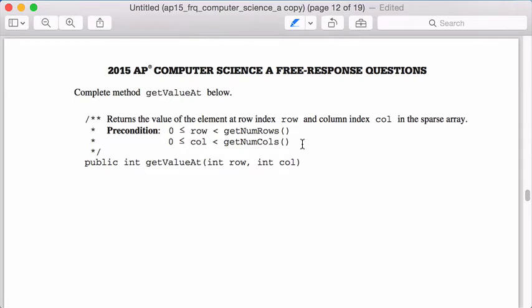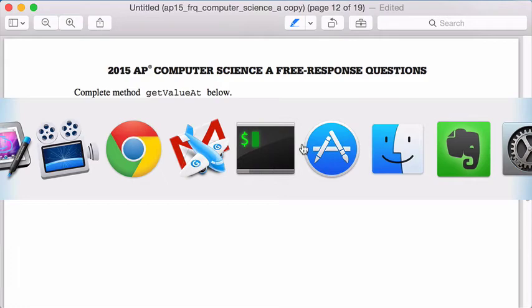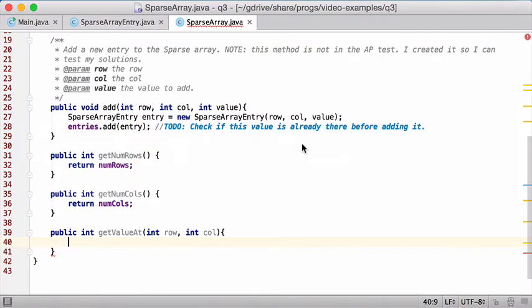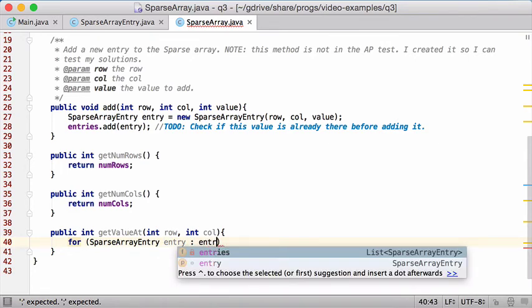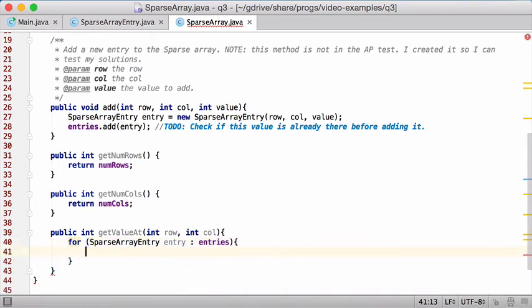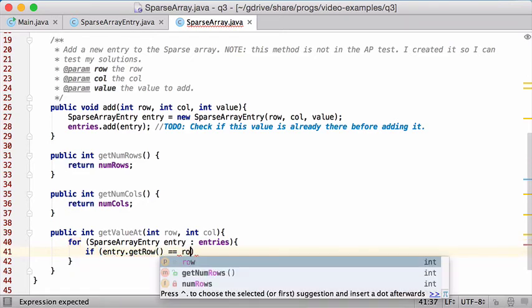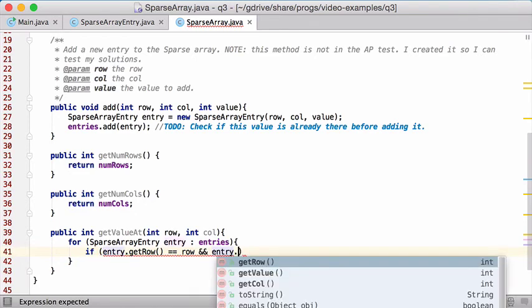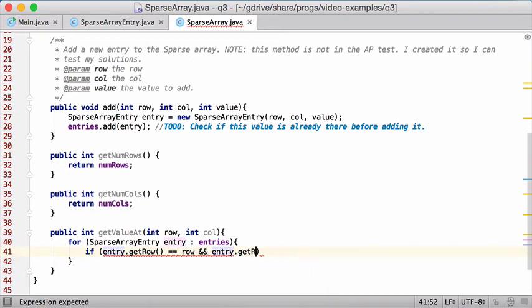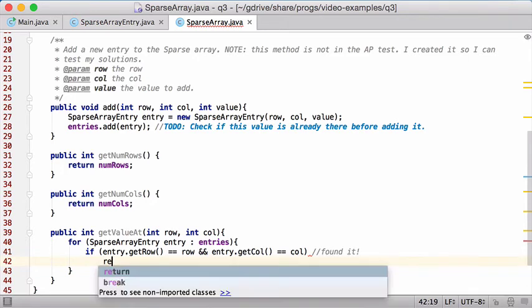I think we pretty much have to throw an exception because we can't return a number because they might think that's the number in that cell. So what I'm gonna do, I'm gonna go through entries. For loop - for each SparseArrayEntry entry in entries, if entry.getRow is row and entry.getColumn is equal to the column, so found it, I'm gonna return entry.getValue.